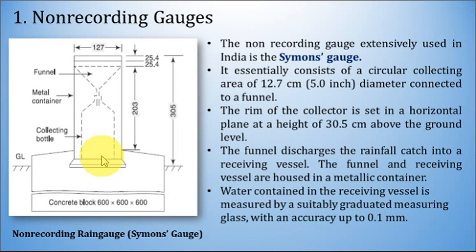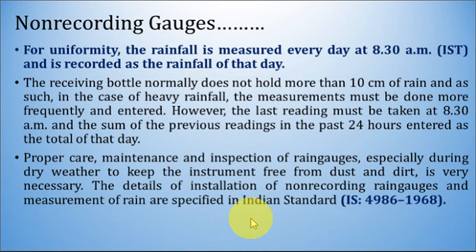Water contained in the receiving vessel is measured by a suitably graduated measuring glass with an accuracy of 0.1 mm. Whatever precipitation is collected in this non-recording Simon's rain gauge, you pour it into a measuring cylinder to find out the depth of precipitation. For uniformity, rainfall is measured every day at 8:30 a.m. Indian Standard Time and recorded as the rainfall of that day. The receiving bottle normally does not hold more than 10 cm of rain, so in the case of heavy rainfall, measurements must be done more frequently. The last reading must be taken at 8:30 a.m. and the sum of previous readings in the past 24 hours entered as the total of that day.